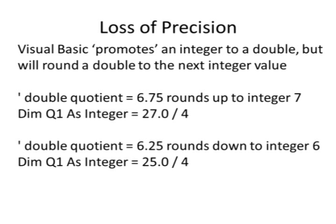For example, if I compute a quotient of 6.75 and then try to store that double number into an integer, it's going to round up to a 7. However, if I have 6.25, that's going to round down to an integer of 6.